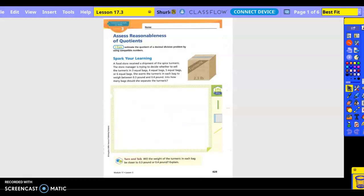A food service receives a shipment of a spice turmeric. The store manager is trying to decide whether to sell the turmeric in three equal bags, four equal bags, five equal bags, or six equal bags. She wants the turmeric in each bag to weigh between three tenths of a pound and four tenths of a pound. Into how many bags should she separate the turmeric?